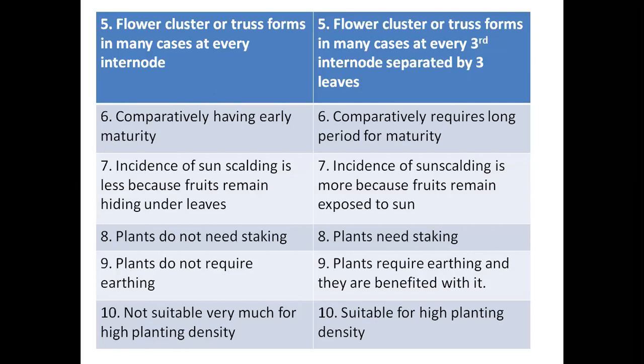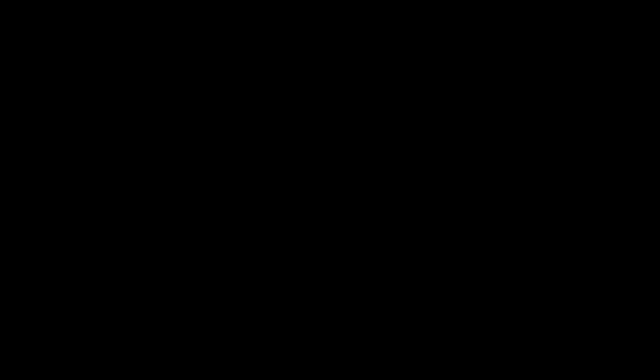Determinate plants do not need staking because they are short and bushy. Indeterminate tall plants need staking — they are tied with threads; in a poly house they can grow up to six feet and are tied up to the roof. Indeterminate types also require earthing up for support. Determinate types are not suitable for high-density planting because bushy plants occupy more horizontal space. Indeterminate types are suitable for high-density planting as they grow vertically and occupy less horizontal space.